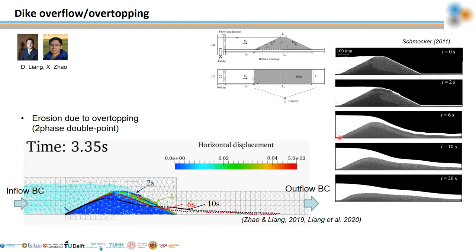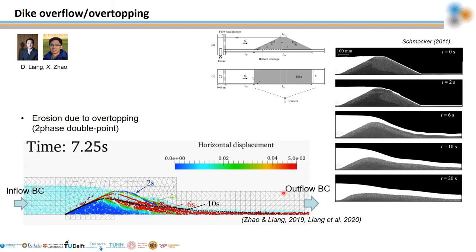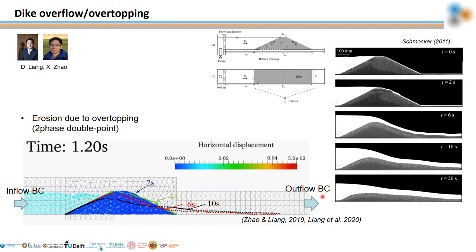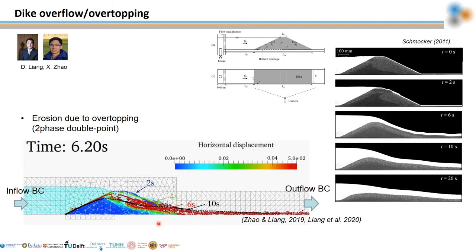An alternative use of the two-point two-phase formulation is to investigate dike stability considering overtopping or overflowing. A comparison between MPM and experimental results is shown. This simulation involves both inflow and outflow boundary conditions for the double-point formulation. Moreover, the effectiveness of defense mechanisms used for dikes — including bottom drainage, core protection, and surface protection — can be investigated with this methodology.